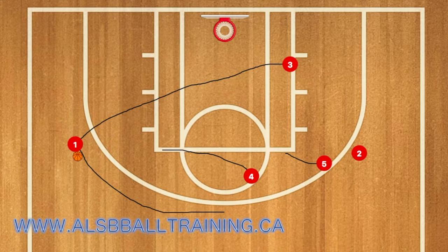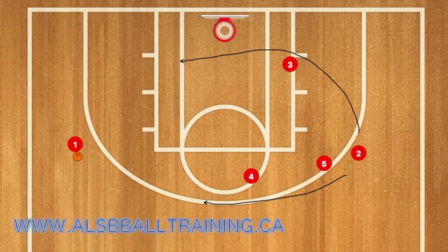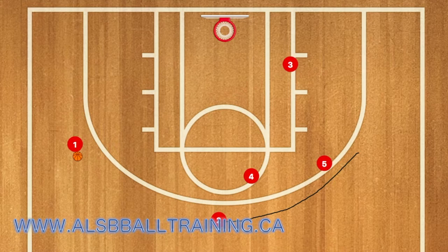First in this play, 3 is going to run down to the right low post, and 4 and 5 are going to set up a staggered screen for player 2. 1 will dribble over to where 3 was.